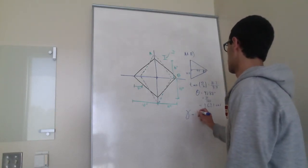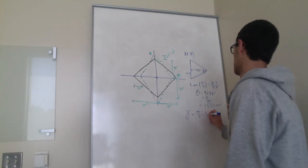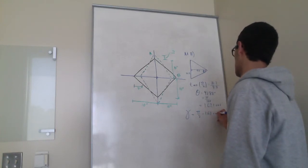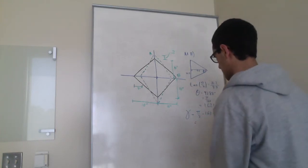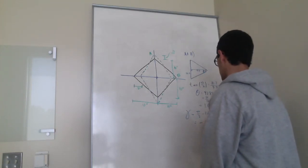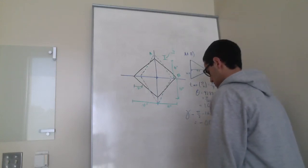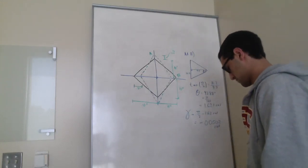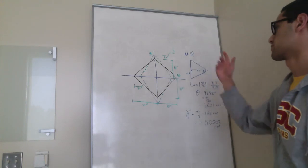Plug that into the equation. We come up with negative 0.050 radians. Which means that the angle is now greater than 90 degrees.